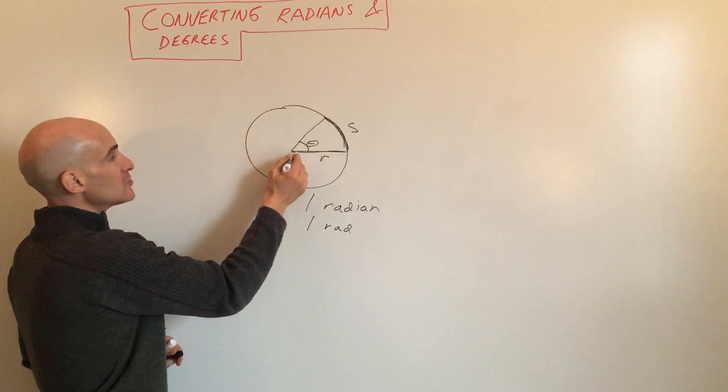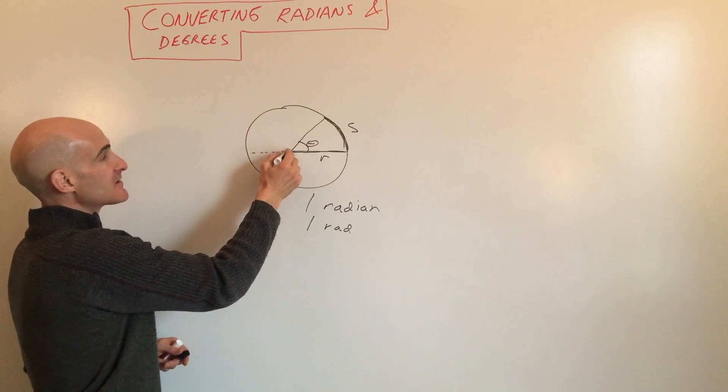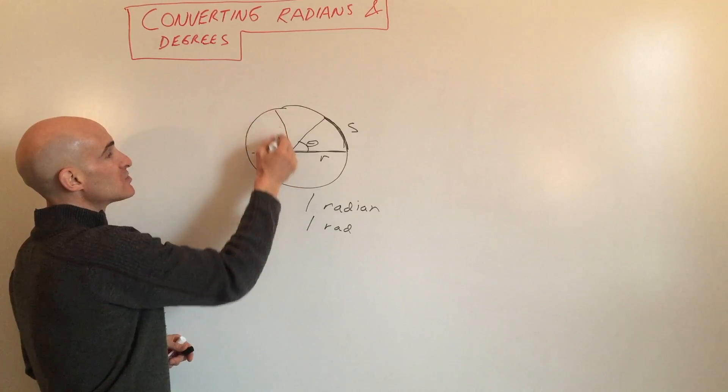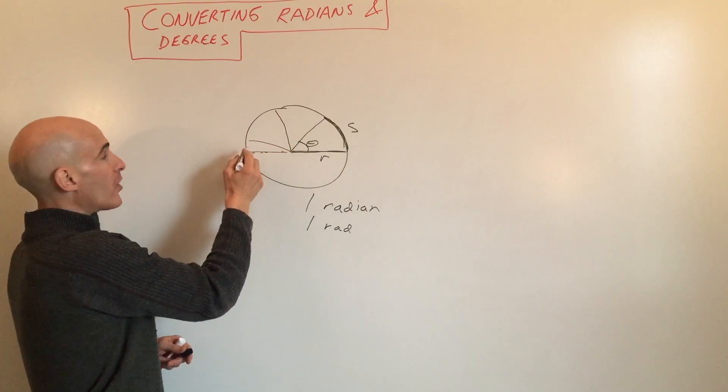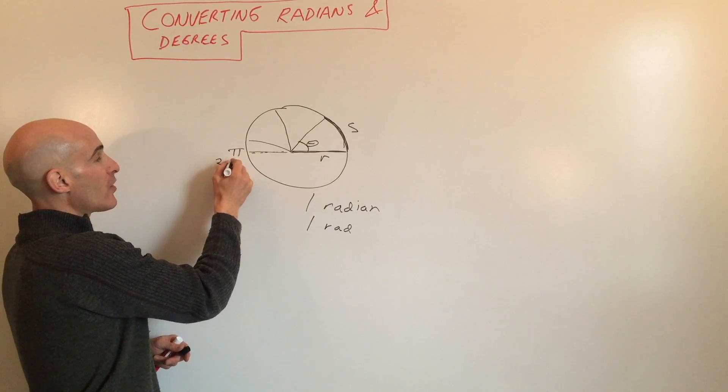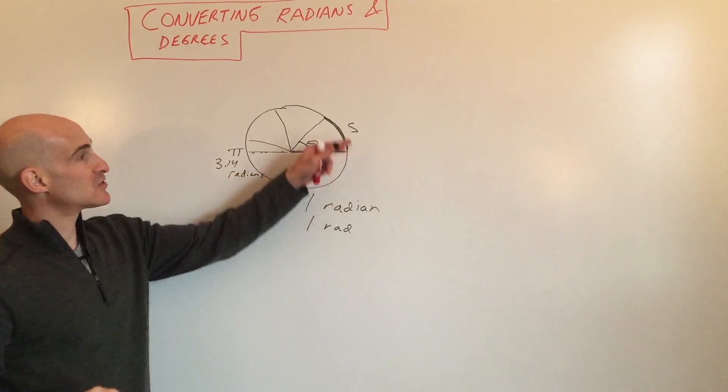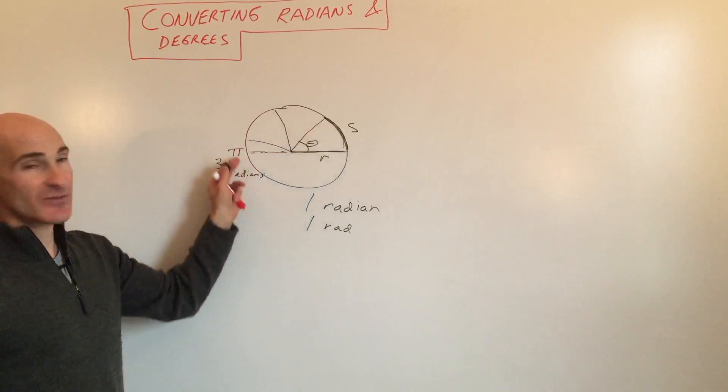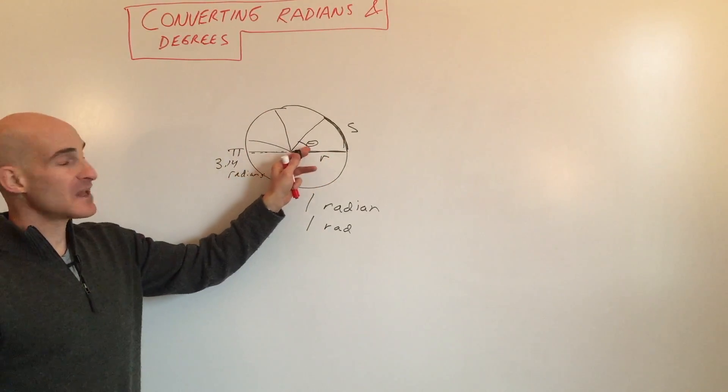If you were to rotate all the way to here, 180 degrees, that's going to be one, two, three and a little bit more. So this is π, which is 3.14 radians.